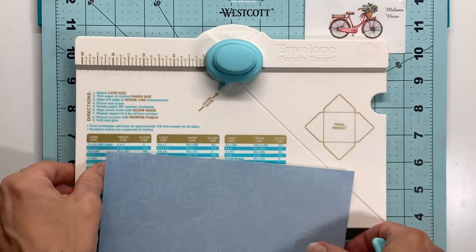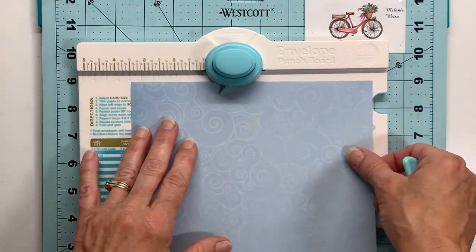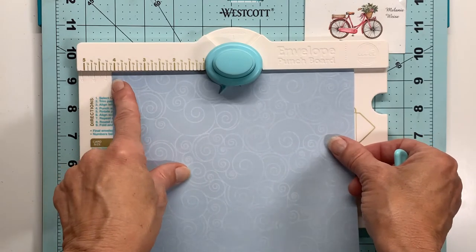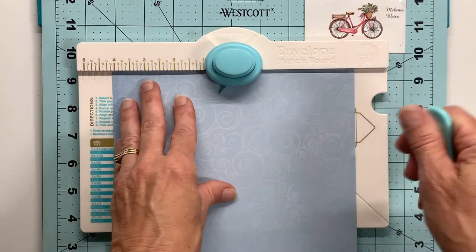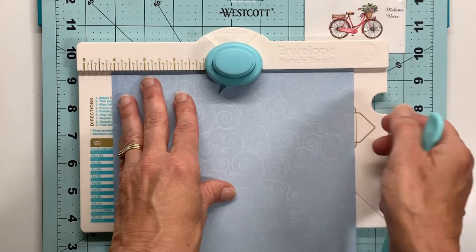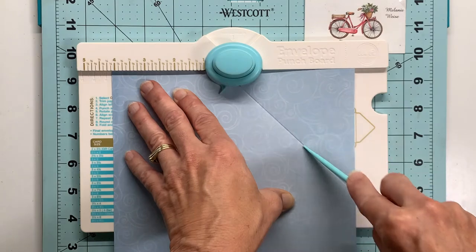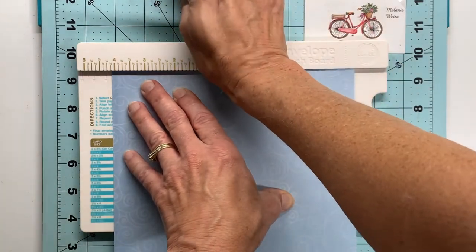So I will take the left hand side of my paper, get aligned at four and a quarter. Take your time with this to make sure your measurements are precise. Then I take my bone folder and do my first score line and punch.